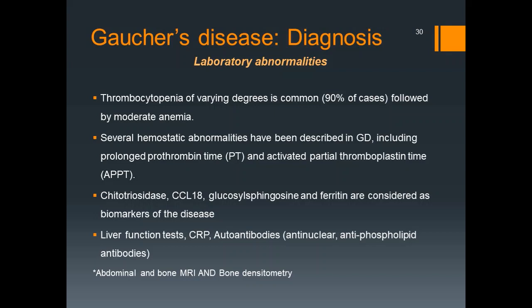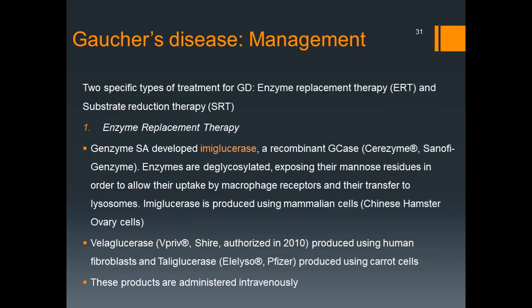Abdominal and bone MRI and bone densitometry are also components of the workup. There are two specific types of treatment for Gaucher's disease: enzyme replacement therapy and substrate reduction therapy. In enzyme replacement therapy, the defective enzyme is replaced. Genzyme SA developed imiglucerase, a recombinant glucocerebrosidase enzyme. The enzymes are deglycosylated, exposing their mannose residues to allow uptake by macrophages and transfer into lysosomes. Imiglucerase is produced using mammalian cells; velaglucerase uses human fibroblasts; and taliglucerase is produced using carrot cells. These products are administered intravenously.